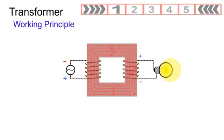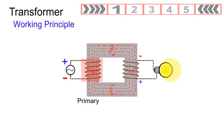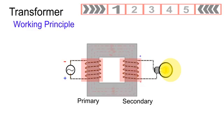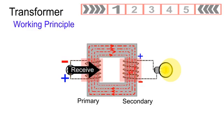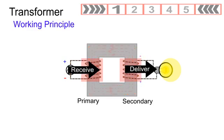In a transformer, either winding may be the primary, the other being the secondary, depending upon which winding receives and which delivers energy.